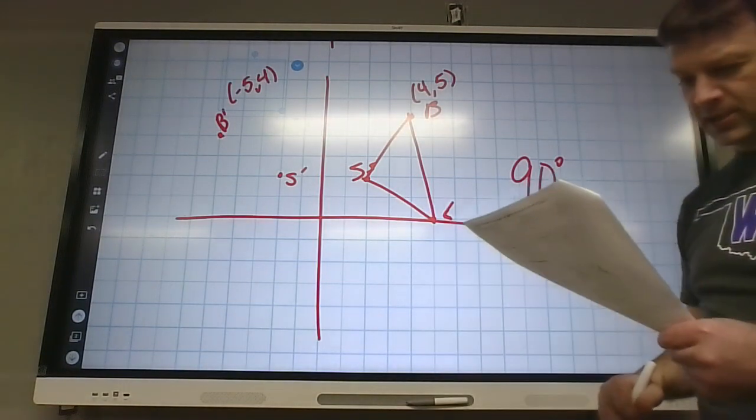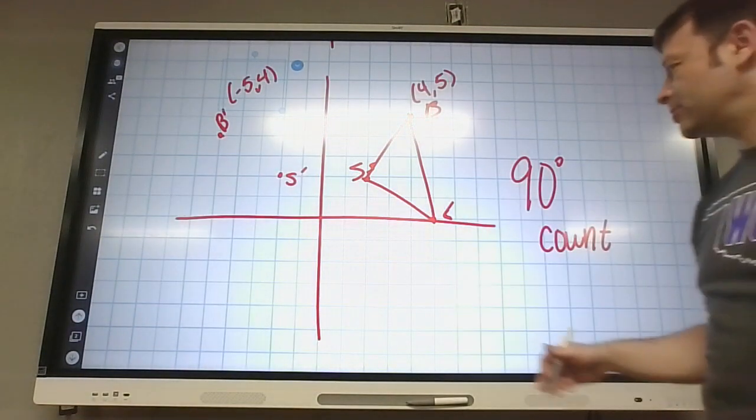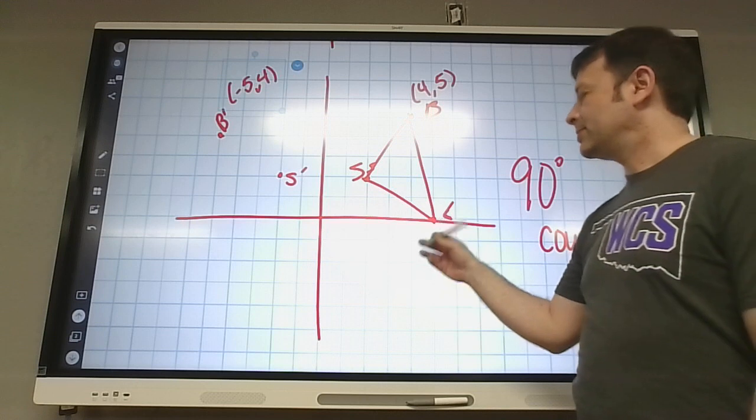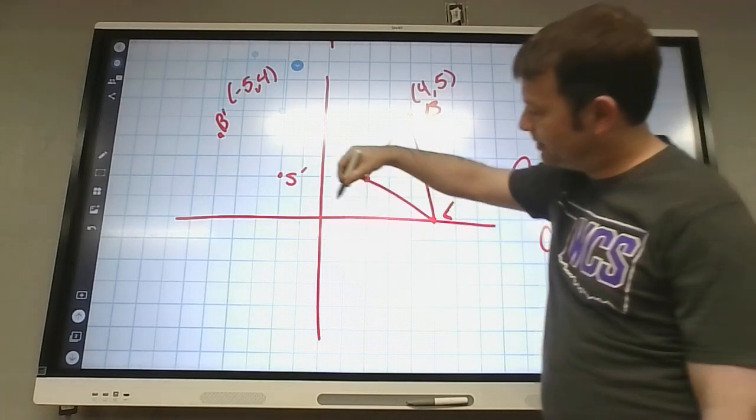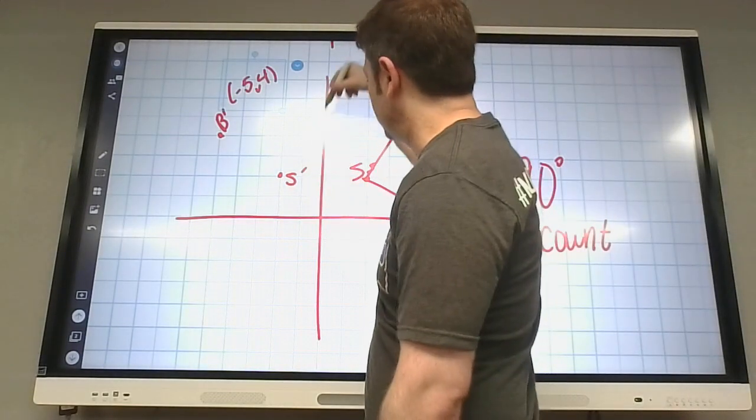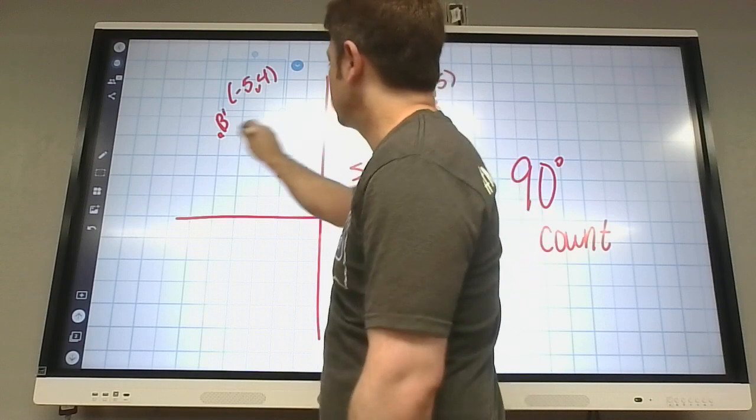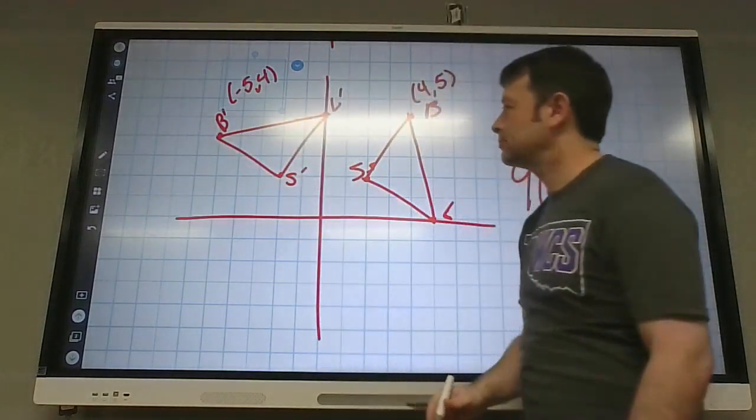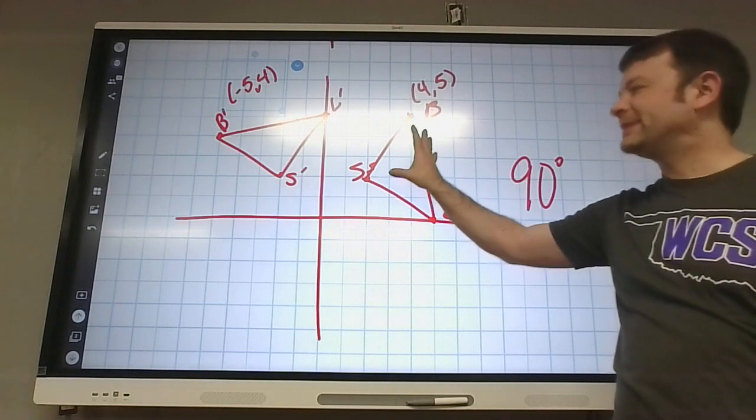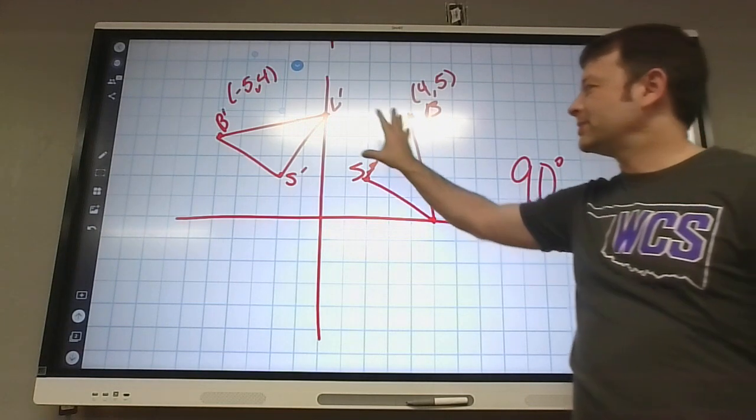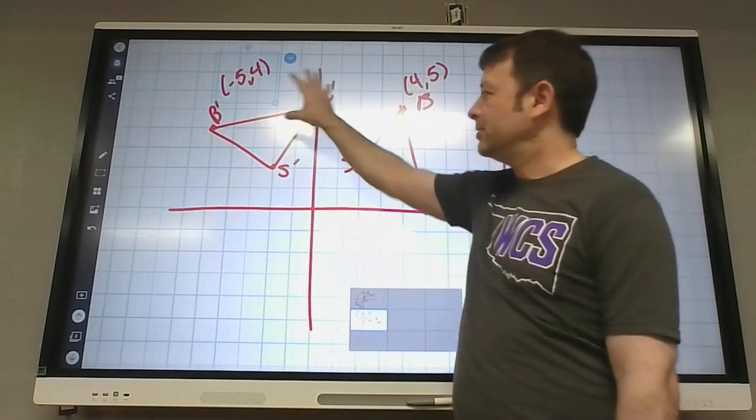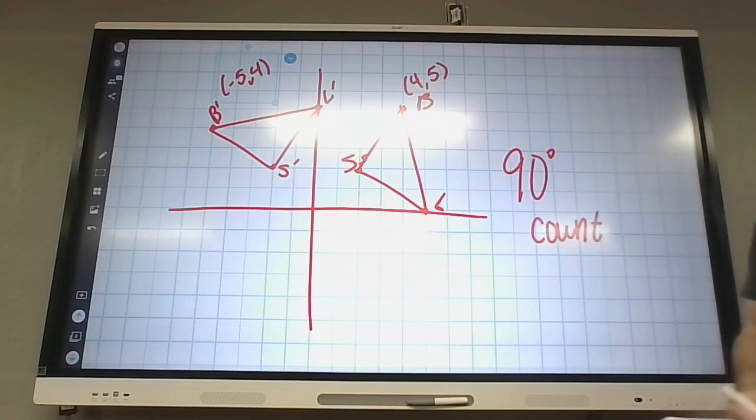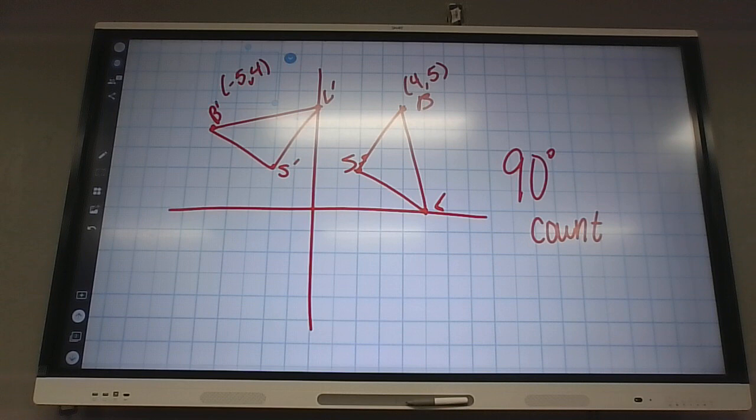L over here is 5 to the right. So if I turn my head 90 degrees counterclockwise, what is 5 to the right? Yeah. It's actually up 5. L prime. If you can use your vision, your imagination, your spatial imagination. Just imagine this like turning around the center from the graph. It should look right.